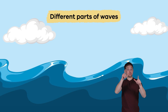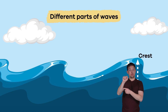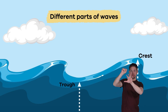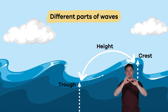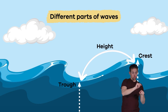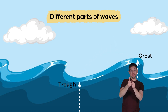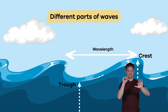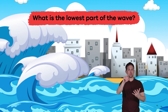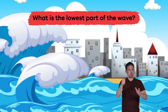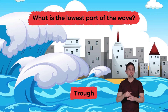Would you be surprised to learn that waves have different parts? The crest is the top of the wave, and the trough is the lowest part. The height of a wave is the distance from the trough to the crest, and the distance between two crests is called the wavelength. What is the lowest part of the wave? The trough.